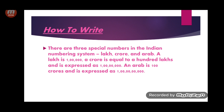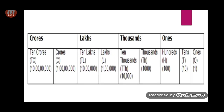There are three special numbers in the Indian numbering system: lakh, crore, and arab. A lakh is written as 1 followed by five zeros. A crore is equal to 100 lakhs and is expressed as 1 followed by seven zeros. An arab is 100 crores. In the Indian place value chart, the ones period has three places — ones, tens, and hundreds — and all other periods have two places, like thousands and ten thousands, lakhs and ten lakhs, crores and ten crores.